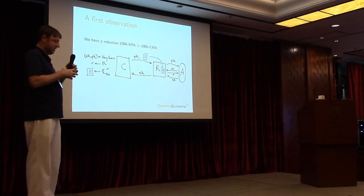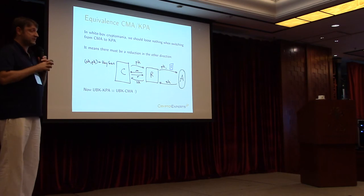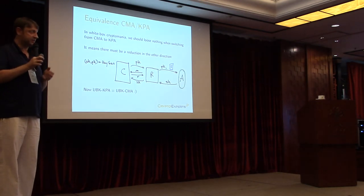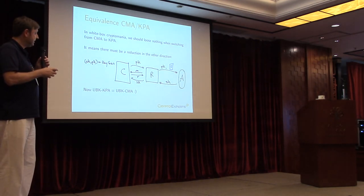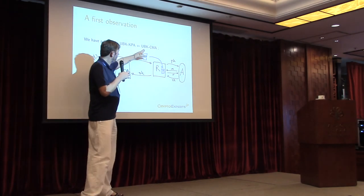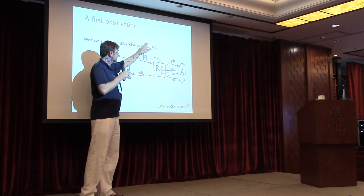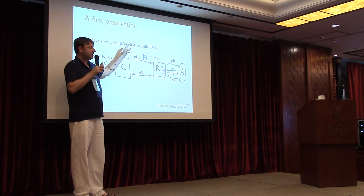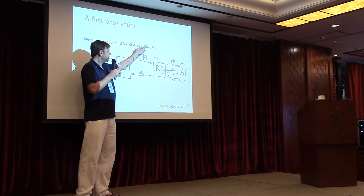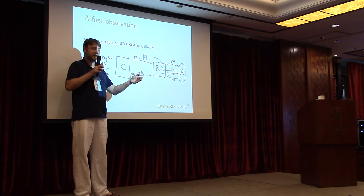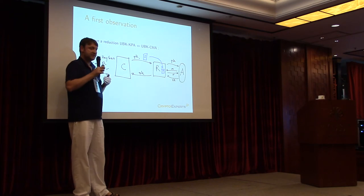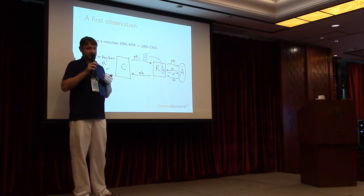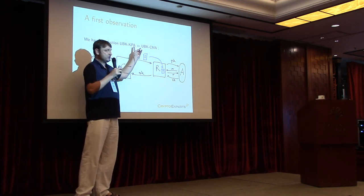We have a reduction where a UBK-CMA attacker plays the role of using the program as an oracle to simulate the signing oracle. So we can convert a UBK-NPA adversary into a UBK-CMA adversary. But now we need to make more precise what we mean by whitebox cryptomania: it means that even though UBK-NPA is strictly weaker than UBK-CMA, in cryptomania we assume we're not losing anything — meaning these two notions are equivalent.